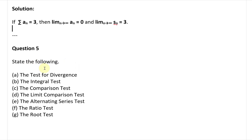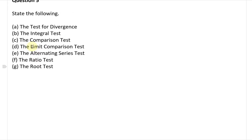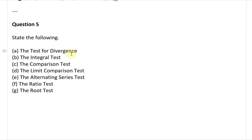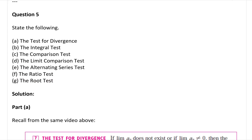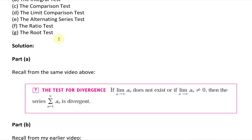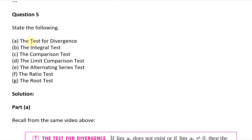Question 5 states: state the following — part A, the test for divergence; part B, the integral test; part C, the comparison test; part D, the limit comparison test; part E, the alternating series test; part F, the ratio test; and part G, the root test. Let's take a look at the solution of question 5.